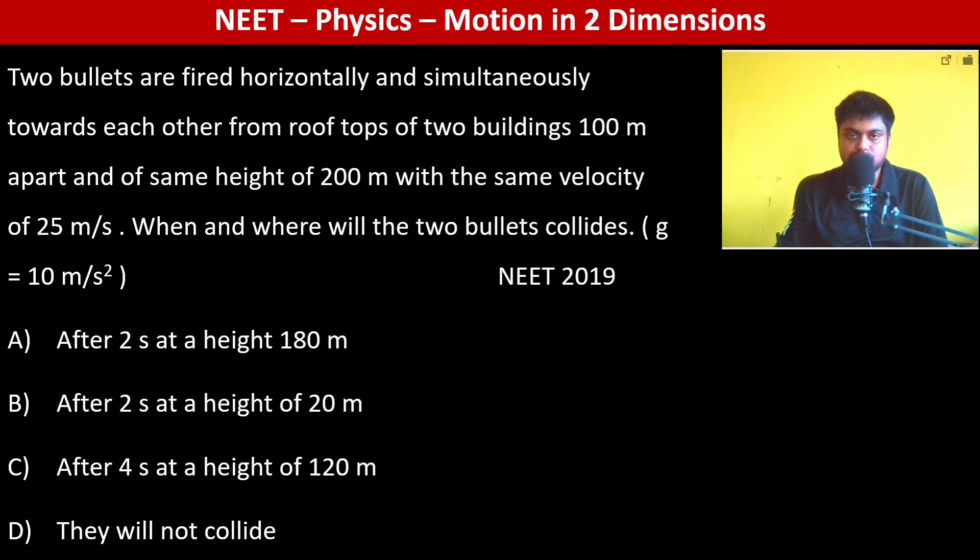Two bullets are fired horizontally and simultaneously towards each other from rooftops of two buildings 100 meters apart. These buildings are of the same height of 200 meters, with the same velocity of 25 meters per second.